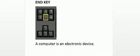Our next key is the End key. This key moves the cursor to the end of the line. Right now the cursor is at the beginning; if I press the End key of my keyboard, the cursor will move to the end of the line. As you can see, by pressing the End key the cursor moved to the end of the line.